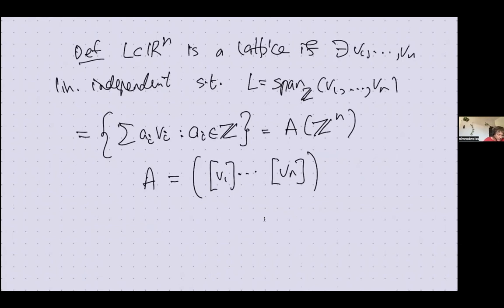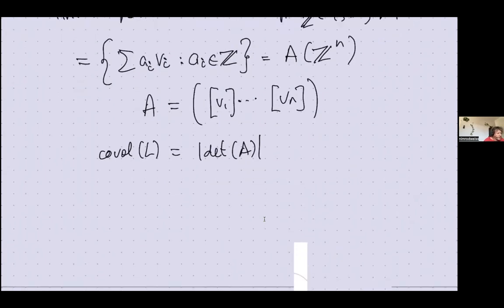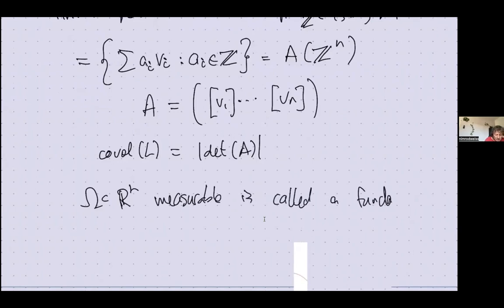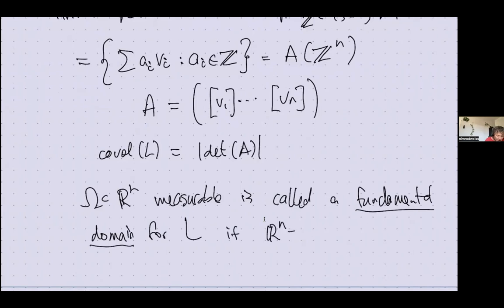The first invariant of a lattice is the co-volume, defined to be the determinant of the matrix A. A lattice may have many different choices of these v_i's — different bases — but the co-volume does not depend on them. A measurable set omega in R^n is called a fundamental domain for lattice L if it tiles perfectly: you can write R^n as the disjoint union of the translates of omega by elements of the lattice.